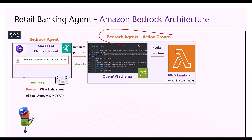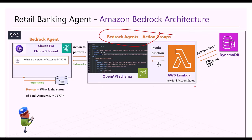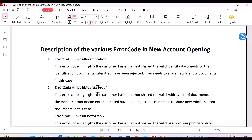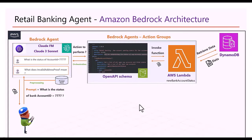Once the action group is created, the Lambda function makes an API call to DynamoDB and retrieves the data requested by the user, and once the agent receives this response it sends it back to the user. For questions like what does invalid address proof mean when account status is pending, this data is not in DynamoDB — so we created a PDF document covering various error codes and what they mean. For that, Bedrock Agent allows integration with a RAG-based or retrieval augmented generation solution built through Amazon Bedrock Knowledge Base. The RAG solution works by uploading the PDF to S3, using the Knowledge Base to create chunks from the document, passing those chunks through the Amazon Titan embedding model to create vector embeddings, and storing those in a vector store — in our case AWS OpenSearch. When the user asks about invalid address proof, the question is passed through the Amazon Titan embedding model and the agent queries this vector store to get a response.